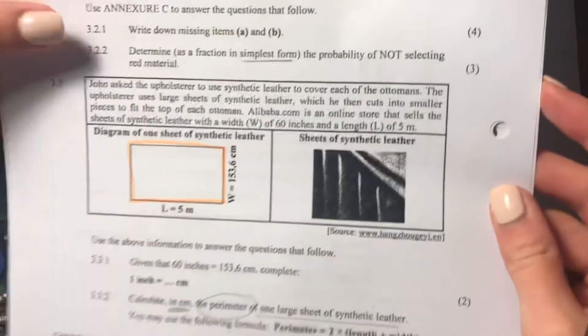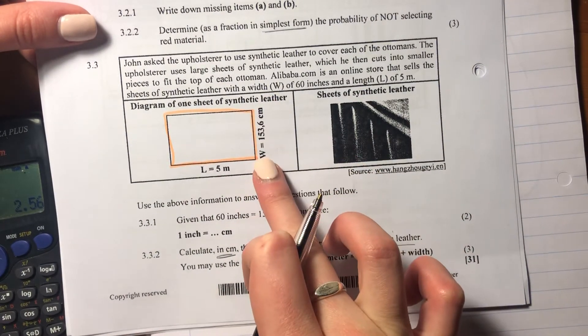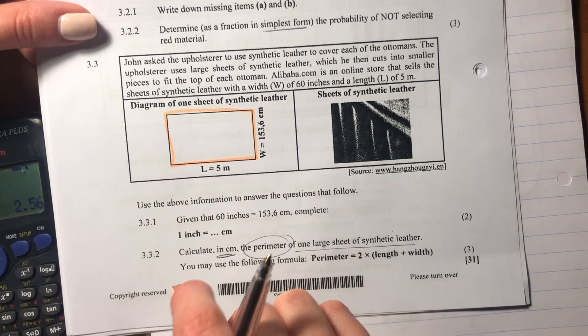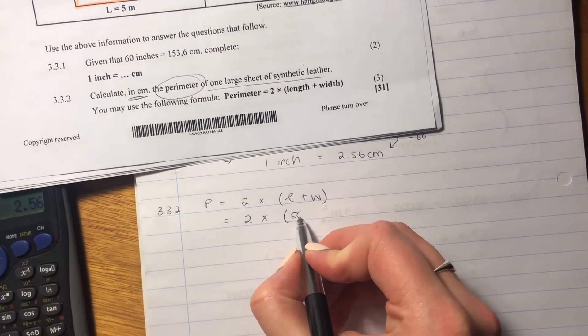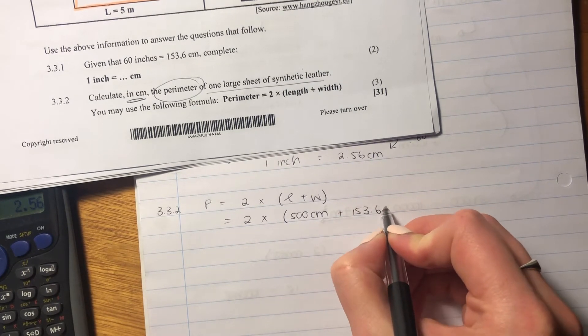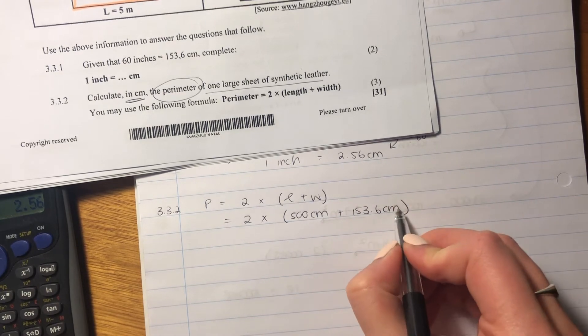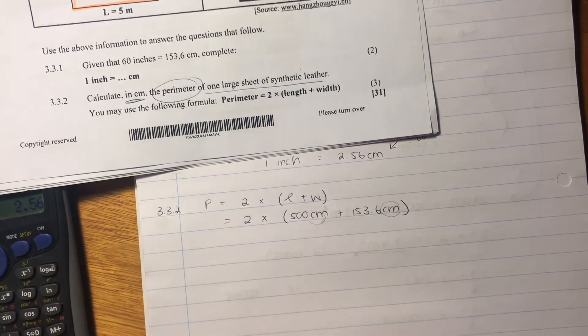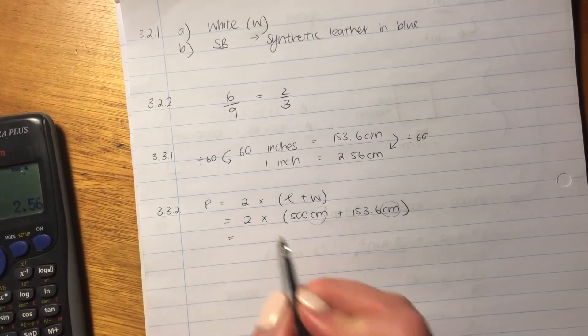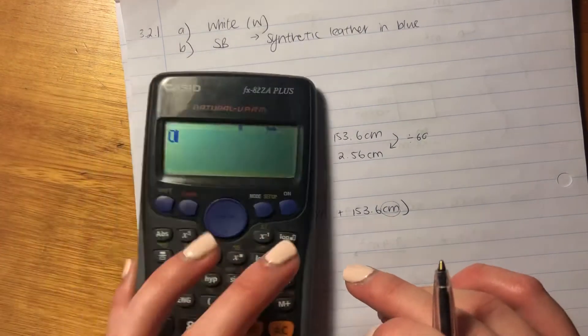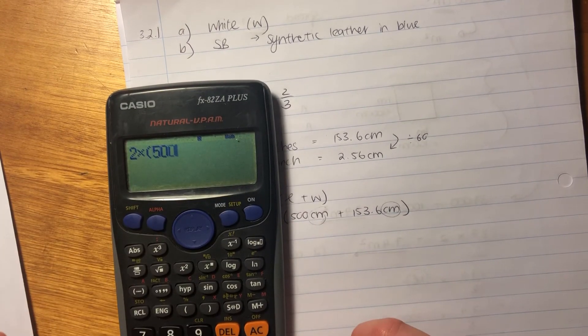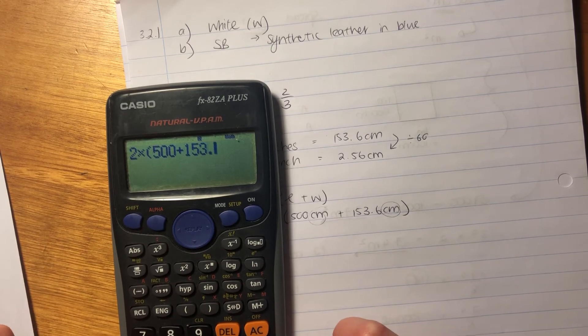But we need to make sure that length and width are in the same measurement. So they've asked us to do it in centimeters. That's fine because we have the width in centimeters. But we don't have the 5 meters in centimeters. So we need to convert that. So our length is actually 500 centimeters plus 153.6 centimeters. I'm just writing it for you so that you know that I've converted everything into centimeters. So my answer is going to be in centimeters.